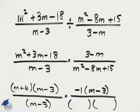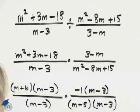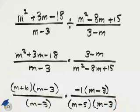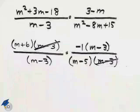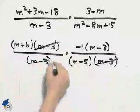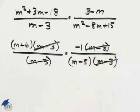The denominator of the second fraction factors into m minus 5 times m minus 3. I can now divide out common factors. I see an m minus 3 as a common factor. I see another pair of m minus 3s that can be divided out.